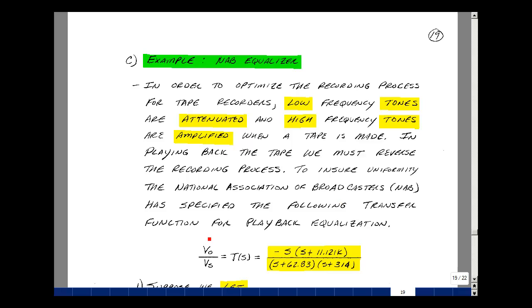The National Association of Broadcasters, or NAB for short, has specified the following transfer function for tape recorder playback equalization: S times (S plus 11.121K) divided by (S plus 62.83) times (S plus 314). There's a similar problem in recording vinyl records, and the equalization curve is a little bit different.